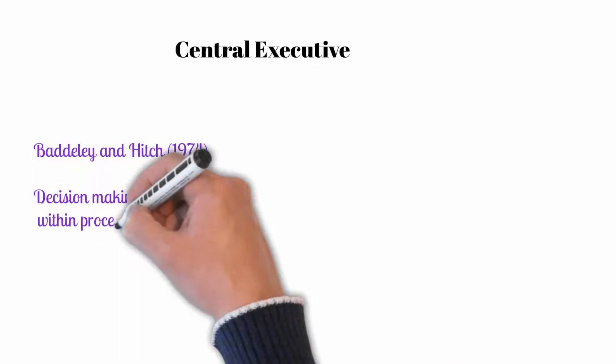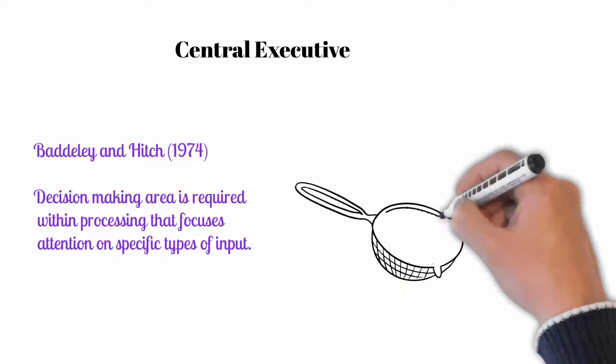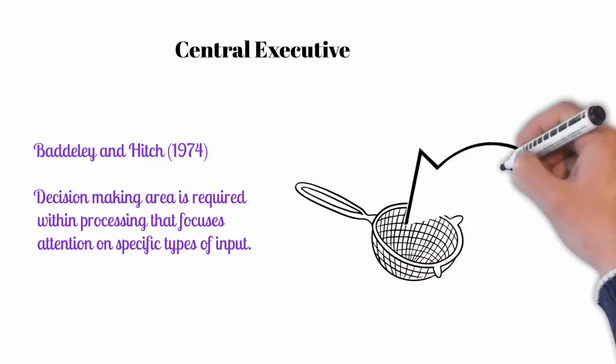According to the creators of the theory, Baddeley and Hitch, some kind of decision-making area is required within processing that focuses attention on specific types of input. You could think of this as rather like an inner filter. Only information required to solve tasks makes it through the filter.